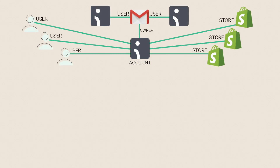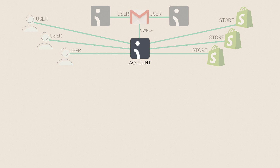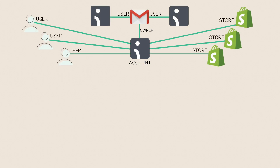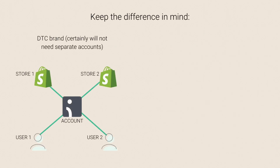That covers everything you need to know about how to properly set up your account, users, and stores in OmniSend. To quickly recap: one email address can be the owner of only one OmniSend account, but it can have multiple users and multiple stores connected to it. For a practical example, if you're a direct-to-customer brand with multiple stores for different markets and you don't need to transfer ownership, you can create them all under one account with the same billing to keep things simple.